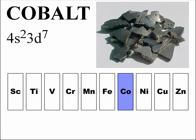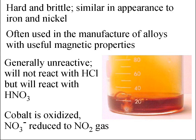Cobalt is the seventh member of the first-row transition elements, with electron configuration 4s² 3d⁷. Cobalt is hard and brittle, similar in appearance to iron and nickel. You rarely see pure cobalt metal, but it is alloyed with other elements to make alloys with useful magnetic properties. Cobalt is generally unreactive — it will not react with hydrochloric acid, but it will react with concentrated nitric acid. In that reaction, cobalt metal is oxidized and goes into solution, turning it red, while nitrate is reduced to nitrogen dioxide gas, the brown gas that comes off.